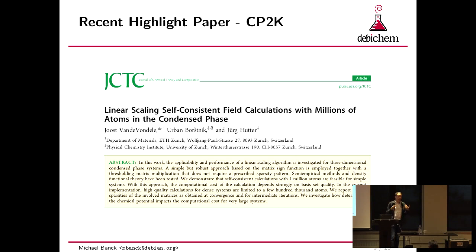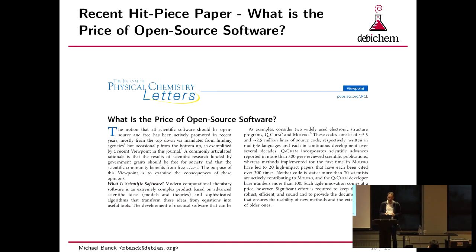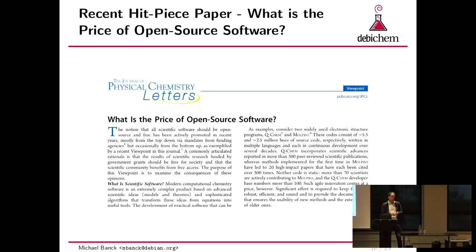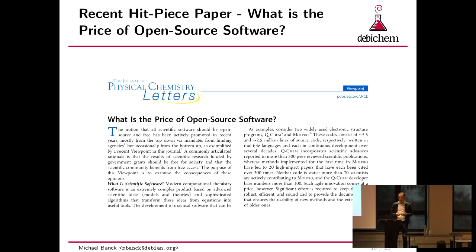These advances in open source got proprietary people quite unhappy. There was a letter in the Journal of Physical Chemistry asking 'What is the price of open source software?' from like 10 or 20 authors — all the main authors of proprietary software packages in computational chemistry. They say everybody says you should open source everything, but we have such a complicated code base: QCHEM has 300 papers and two and a half million lines of code. People should continue funding our proprietary model of innovation.